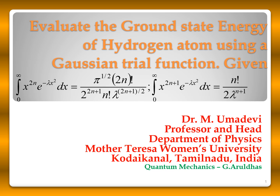We will see a problem in the variation method in quantum mechanics. The problem is to evaluate the ground state energy of the hydrogen atom using a Gaussian trial function. The given standard integrals are: the integral from 0 to infinity of x^(2n) e^(-λx²) dx equals (π^(1/2) · (2n)!) / (2^(2n+1) · n! · λ^((2n+1)/2)), and the integral from 0 to infinity of x^(2n+1) e^(-λx²) dx equals n! / (2λ^(n+1)). This problem is taken from Quantum Mechanics by Araldas.